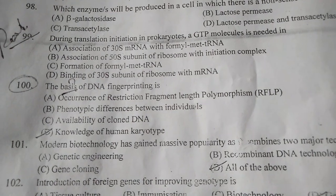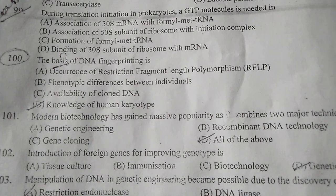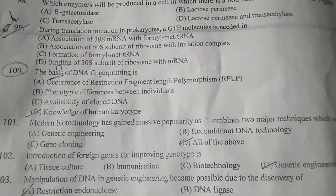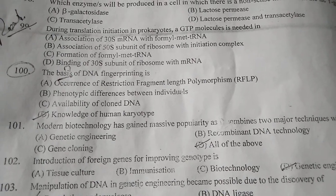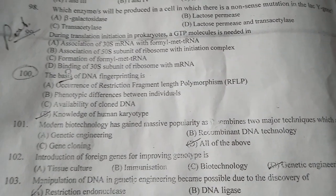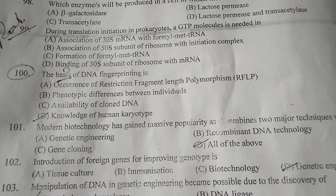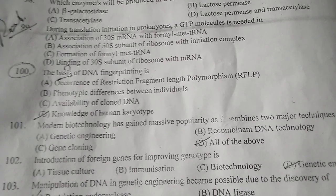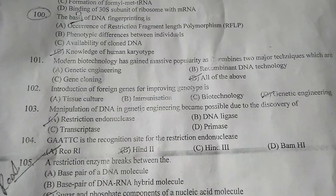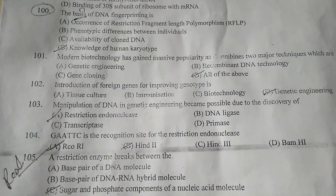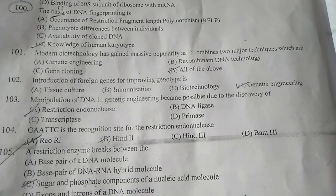Question number 100: The basis of DNA fingerprinting is — the correct answer is A. Question number 101: Modern biotechnology has gained massive prominence as it combines two major techniques. Please read again carefully, then I will give the answer. The correct answer is D — all of these — meaning genetic engineering, recombinant DNA technology, and gene cloning.